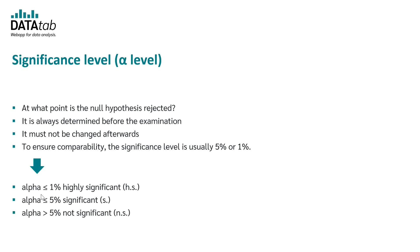So what does it mean now? An alpha level of 1% or below is called highly significant. If we have an alpha level of 5% or below, the result is called significant. And if we have an alpha level of more than 5%, the result would be not significant.